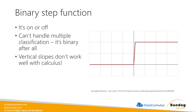The bigger problem with the binary step function has to do with calculus. As we're learning through the network, we have to compute derivatives of these activation functions. Vertical slopes in calculus really don't get along — the derivative would be infinite, causing the math to blow up. That's why the step function is shown with a slight slant, just to make the math not explode. The binary step function is kind of where neural networks started, but they quickly found it was very limited, so you don't really see it in use much today.